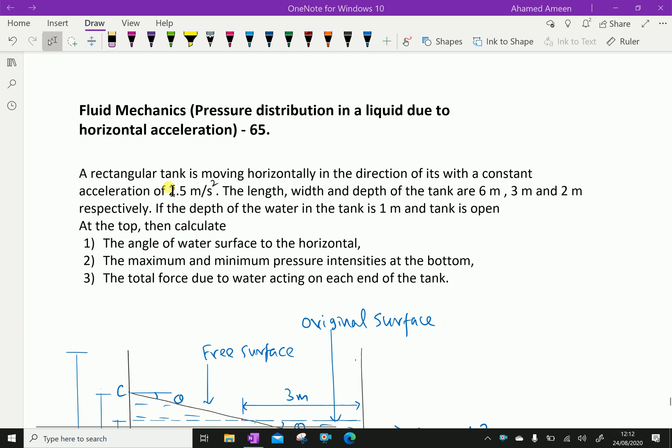Example: A rectangular tank is moving horizontally in the direction of its width with a constant acceleration of 2.5 meters per second squared. The length, width, and depth of the tank are 6 meters, 3 meters, and 2 meters respectively.